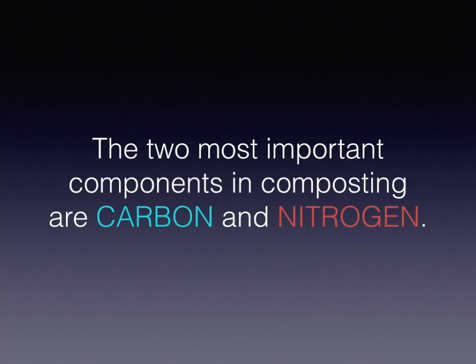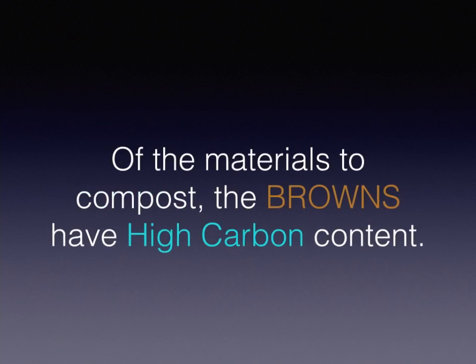The two most important components in composting are carbon and nitrogen. Carbon is the central element of composting, while nitrogen is the most significant other ingredient. Of the materials to compost, the browns have high carbon content — brown referencing the color of the organic material. This includes wood products, fruit waste, vegetable stalks, leaves, and peat moss, to name a few.